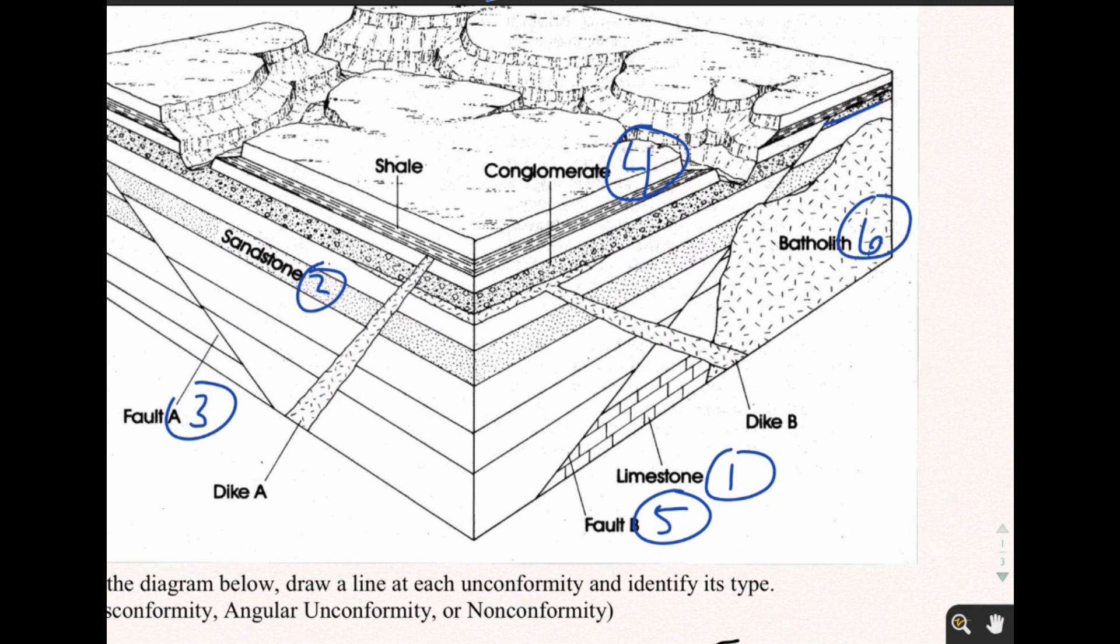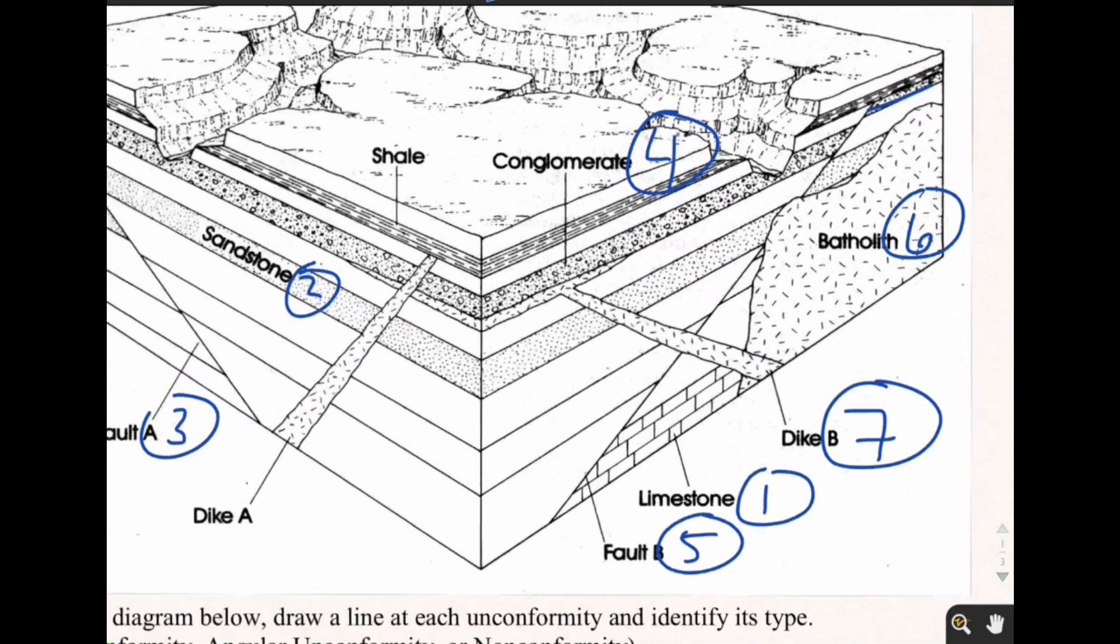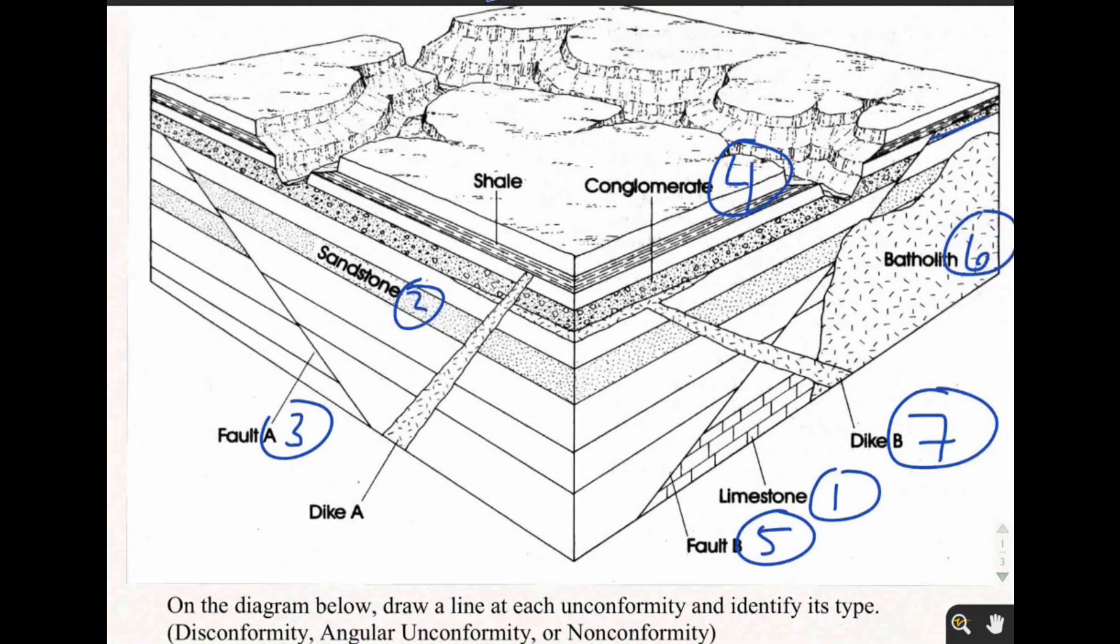What's number seven? We've already figured out the answer. It's Dike B because it goes on top of the batholith, but it is still under Dike A. So Dike A is next at number eight.